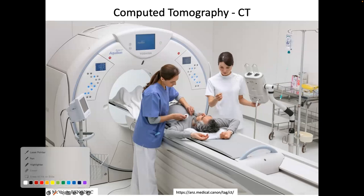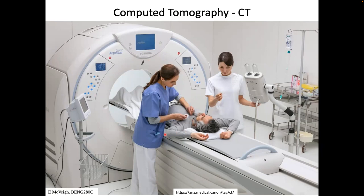The CT scanner has a donut-like configuration — a cylinder with about a one-meter wide bore — and the patient rolls through. They can roll through continuously, or you can stop and scan a spot and then move them to a different location.